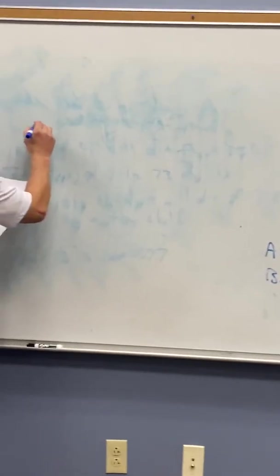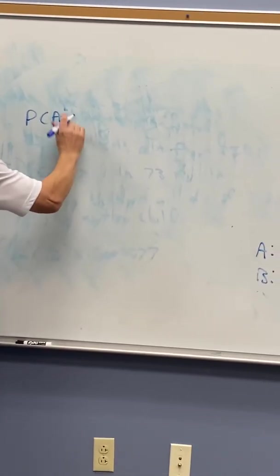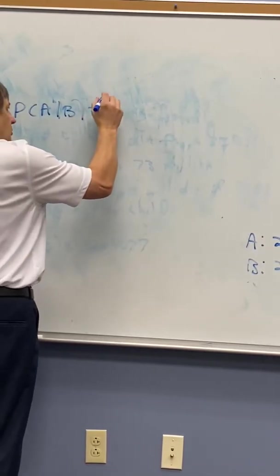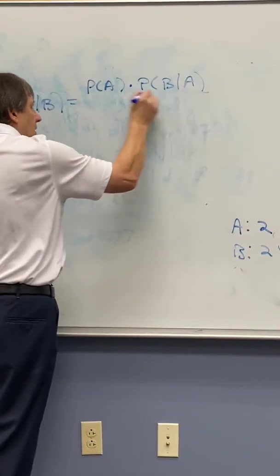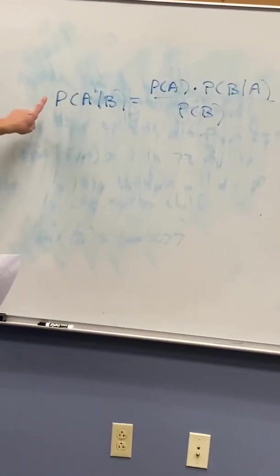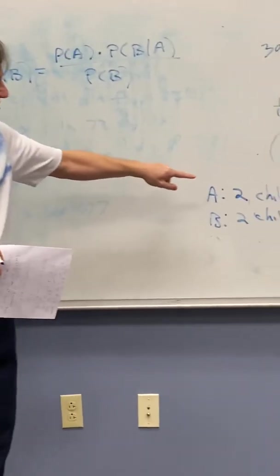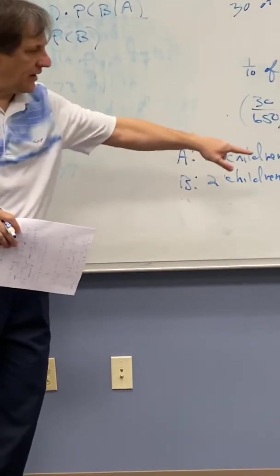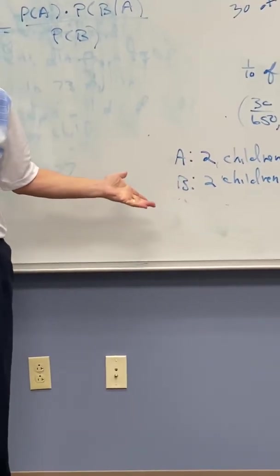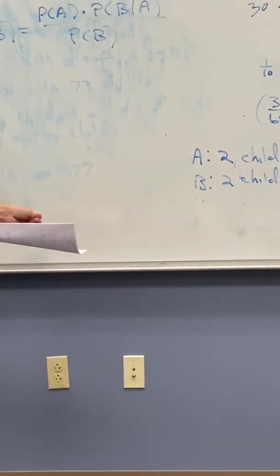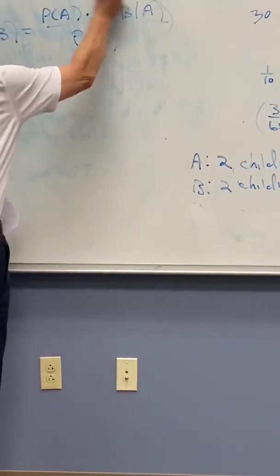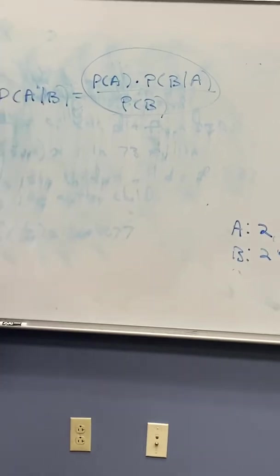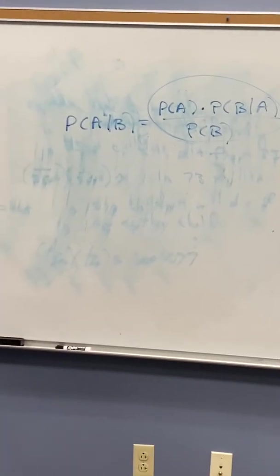Remember that Bayes' Theorem is the probability of A given B equals the probability of A times the probability of B given A over the probability of B. We want to find this number. We want to find the probability that two children died from SIDS given that they died suddenly and unexpectedly. Well, we know they died suddenly and unexpectedly, right? Because they were dead. It was unexpected. What is the probability that they really did die from SIDS? If we can find this information, we can answer that question and thus, hopefully, make a conclusion as to whether or not she should be convicted.